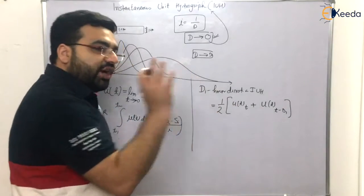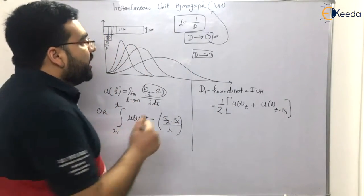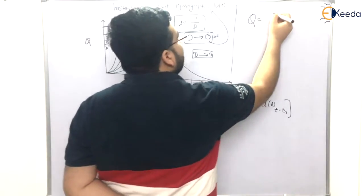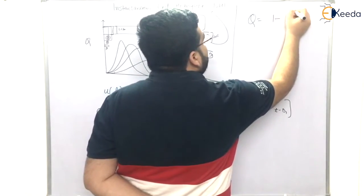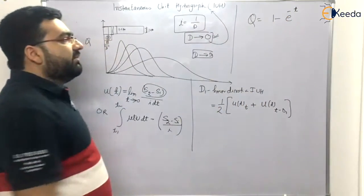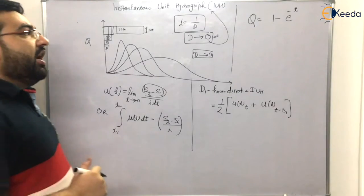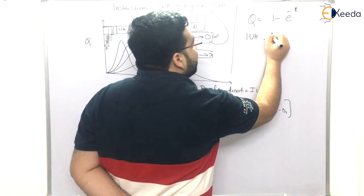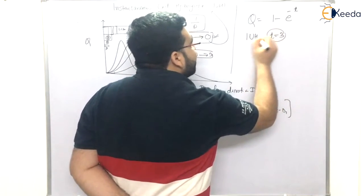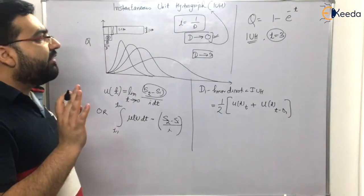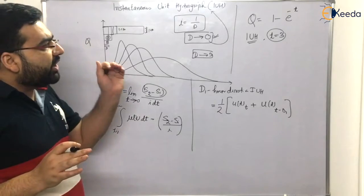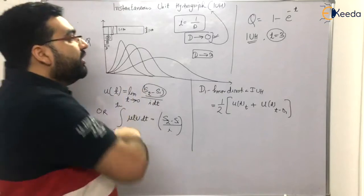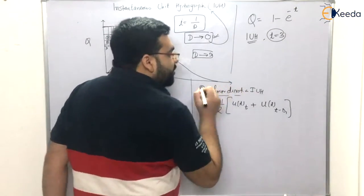Let me give you one example. Suppose you are given a discharge profile: Q equals 1 minus e raised to the power minus t. In the question you are told to determine the instantaneous unit hydrograph at t equals 3. Sometimes the question just says calculate the unit hydrograph at a particular time interval t equals 3, without even mentioning IUH explicitly.